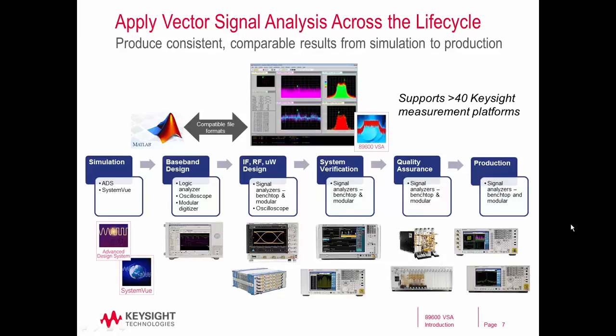For example, you can use an oscilloscope or a logic analyzer for the baseband design, then use a benchtop signal analyzer to do the system verification, then move to a high-speed signal analysis platform for your production needs. Through this capability, you're able to minimize a lot of the risk in terms of switching between your measurement solutions, optimize for the tasks you're performing, cut down product development time, and get your solution to market faster.